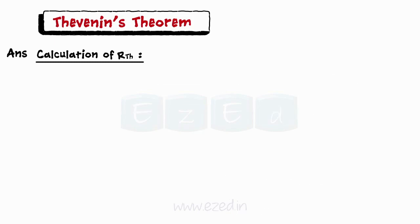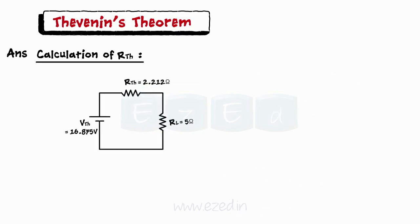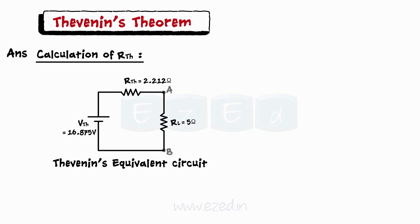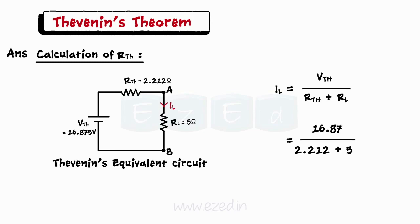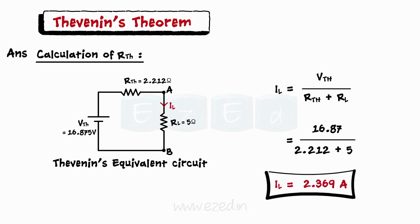We get the Thevenin's equivalent circuit as shown. The current through branch AB can now be calculated as IL equals Vth upon (Rth plus RL), which comes out to be 2.369 Amperes. Thus, we have calculated the branch current using Thevenin's Theorem.